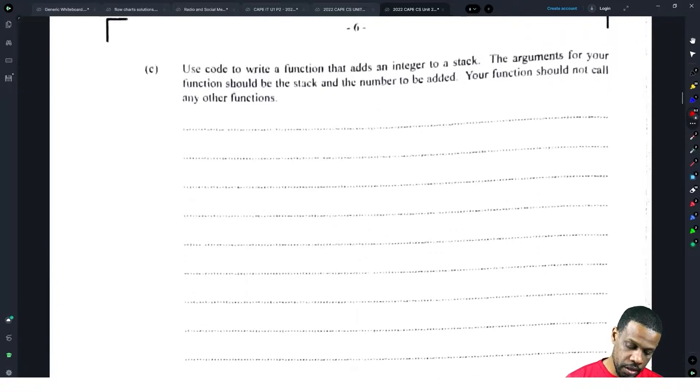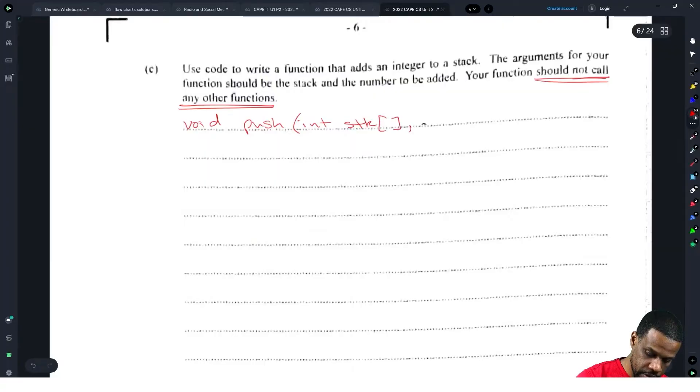Part C: Use code to write a function that adds an integer to stack. Your arguments for your function should be the stack and the number to be added. Your function should not call any other functions. This part here is it should not call any other functions, and if your queue is full or is empty, they will get mad at you. So, function, now add a stack of void, push. Your argument should be the stack, so int stack, your brackets, and the value, int value. We get those two and now our job is to open brackets, push, open brackets.